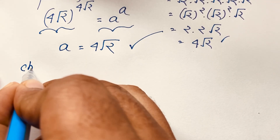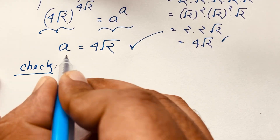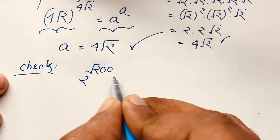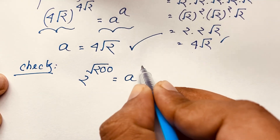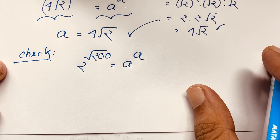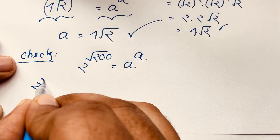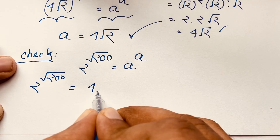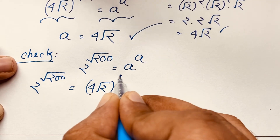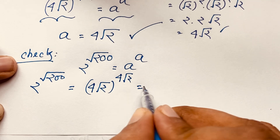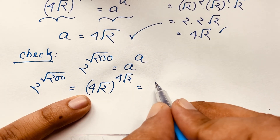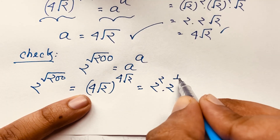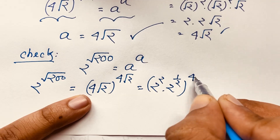Now let's verify our answer. Our question is 2^√200 = a^a. We substitute a = 4√2, so we check (4√2)^(4√2). Now, 4 = 2^2 and √2 = 2^(1/2), so 4√2 = 2^2 times 2^(1/2), and the exponent is also 4√2.